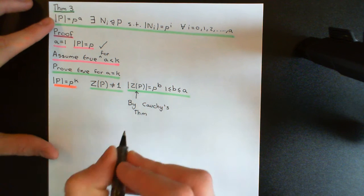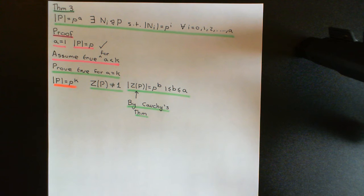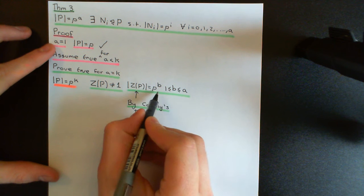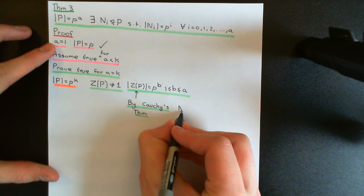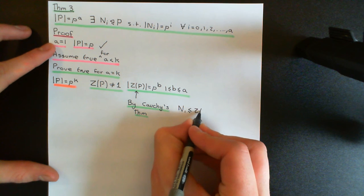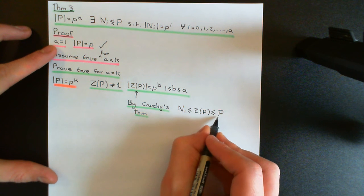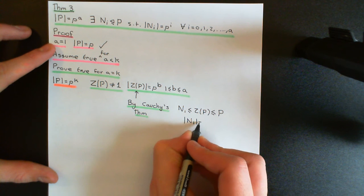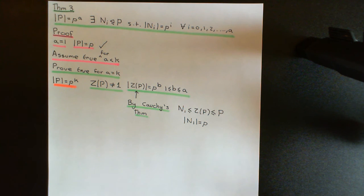Cauchy's theorem, remember, is a theorem concerning finite groups: if you take the order of a group and factorise it into its prime factorisation, Cauchy's theorem tells you there exists a subgroup of size equal to each of those primes. Here, applied to the centre of this p-group, Cauchy's theorem tells me I can find a subgroup of this centre of order p. I'll call this N_1 — it's a subgroup of the centre of P, and since the centre is itself a subgroup of capital P, N_1 is a subgroup of capital P with order p.